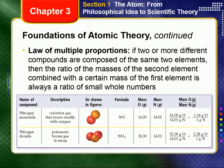It was also known that two elements sometimes combine to form more than one compound. For example, the elements carbon and oxygen form two compounds, carbon dioxide and carbon monoxide.